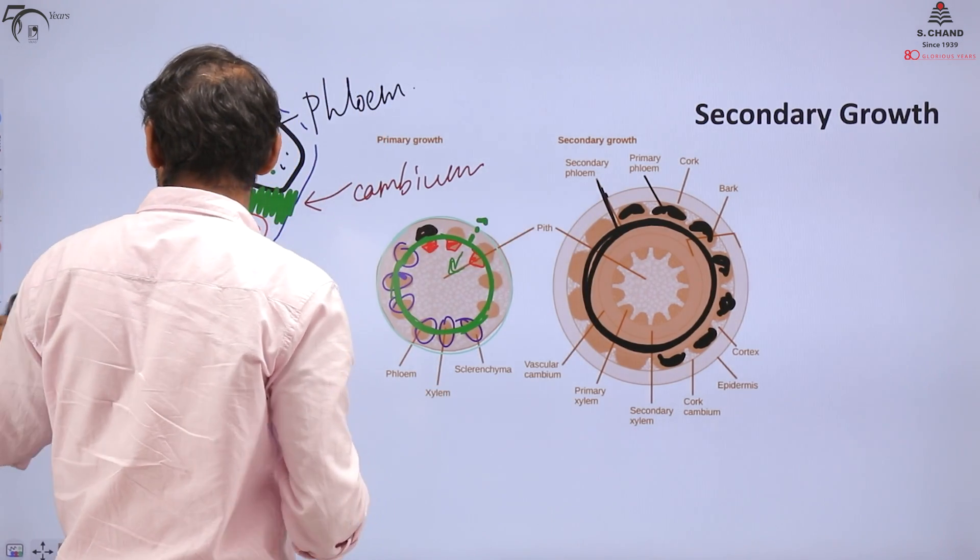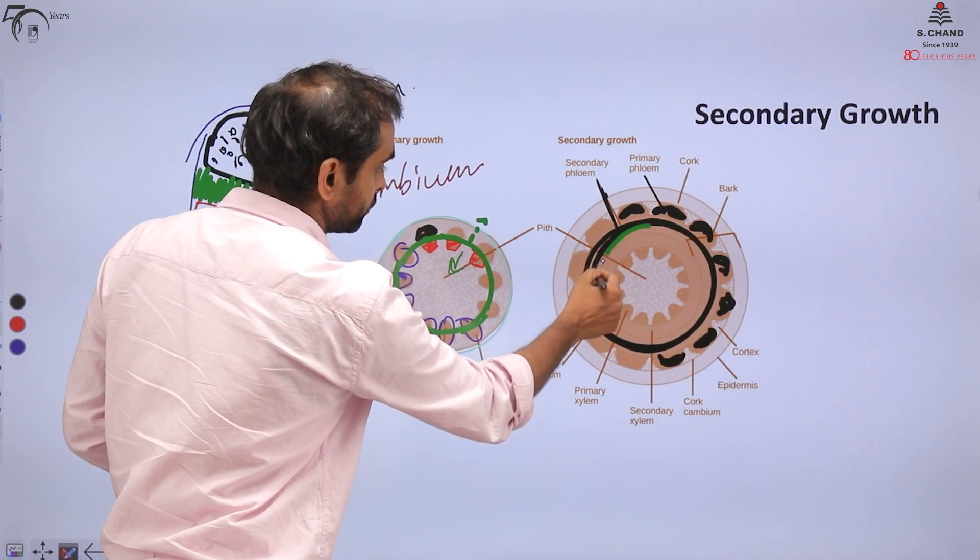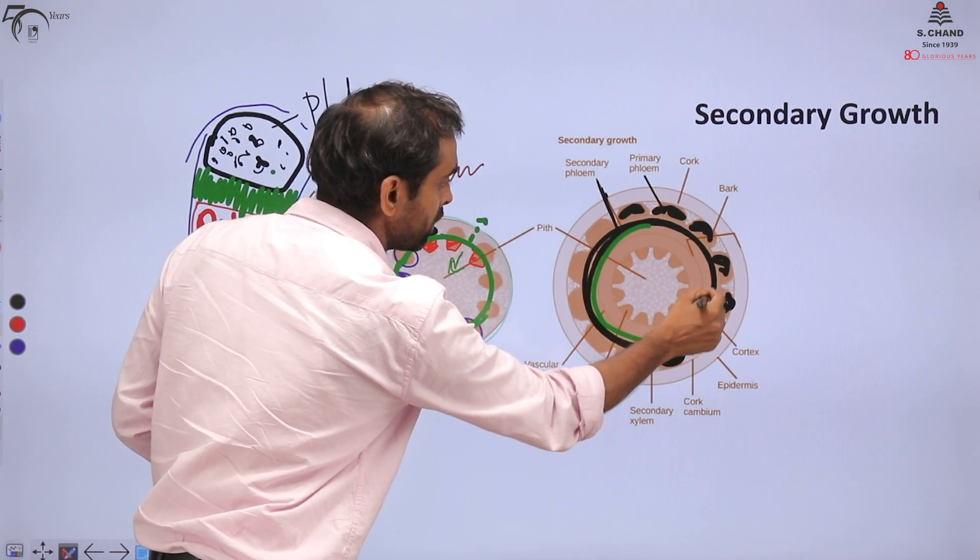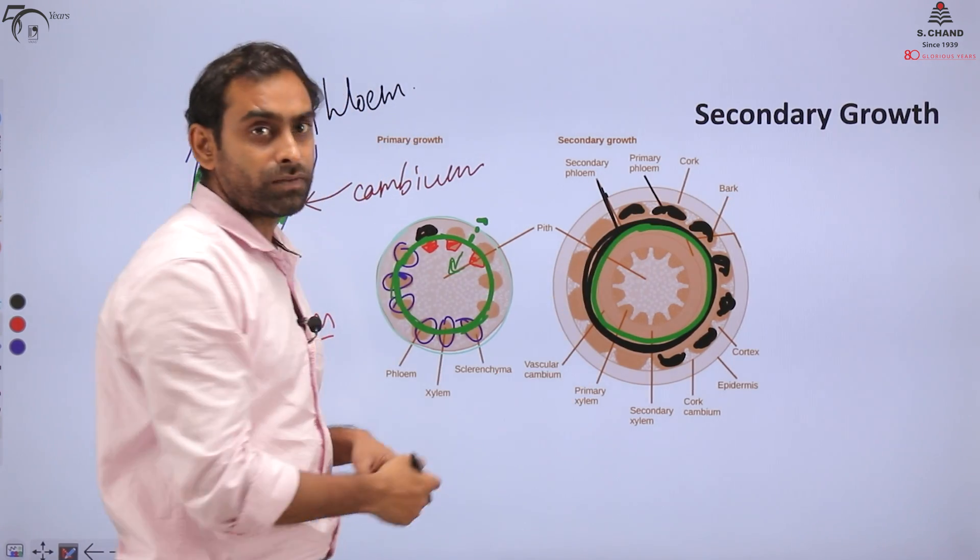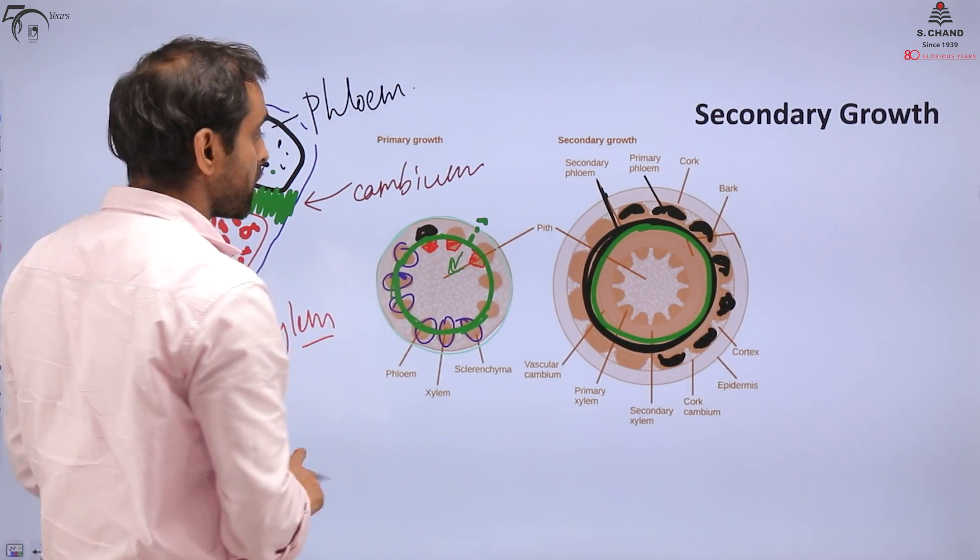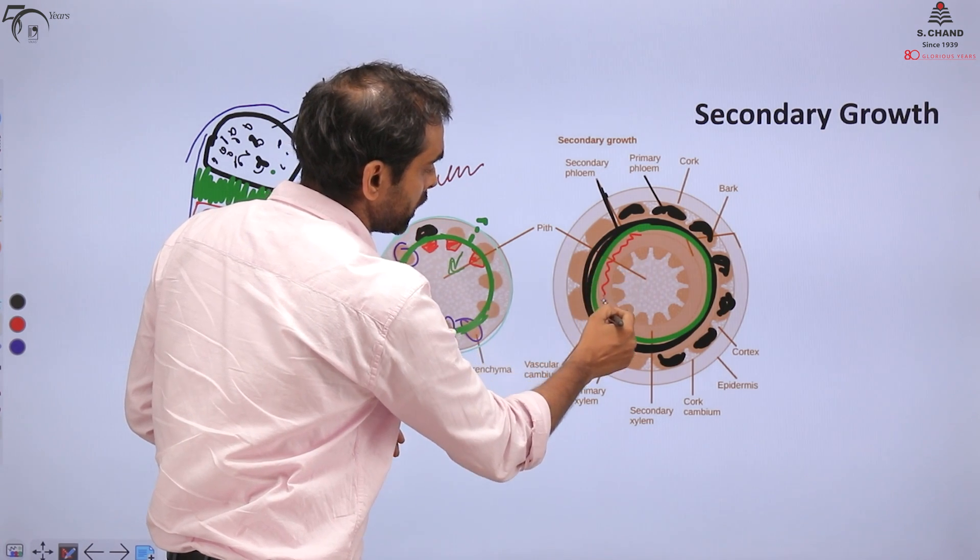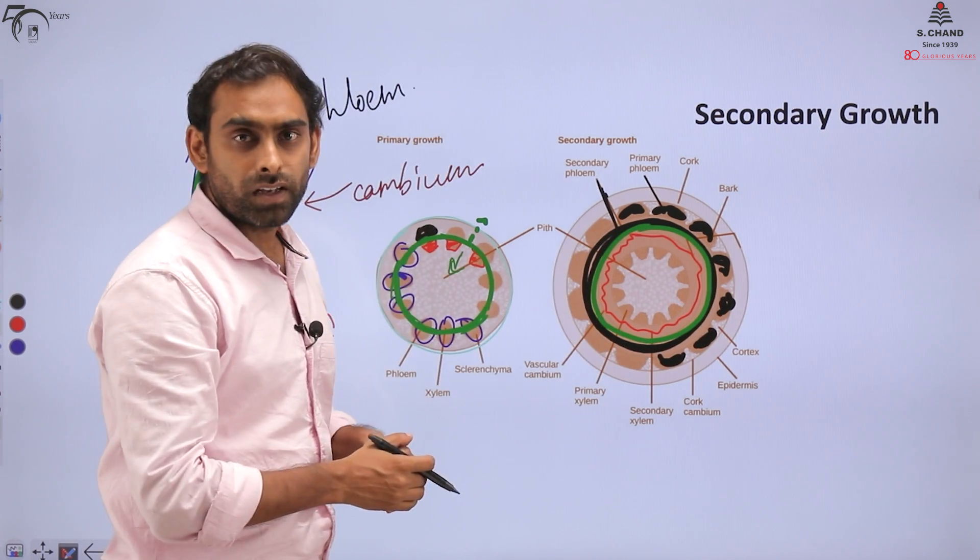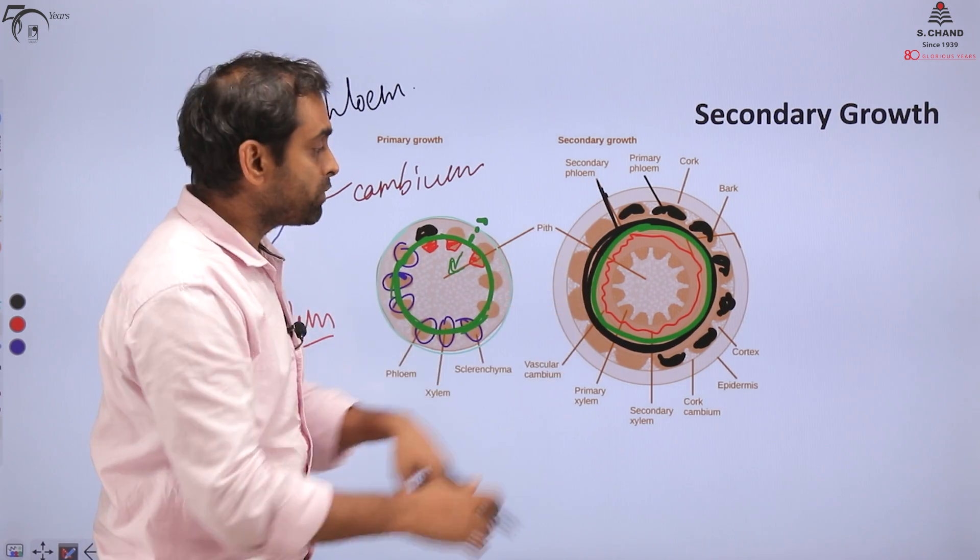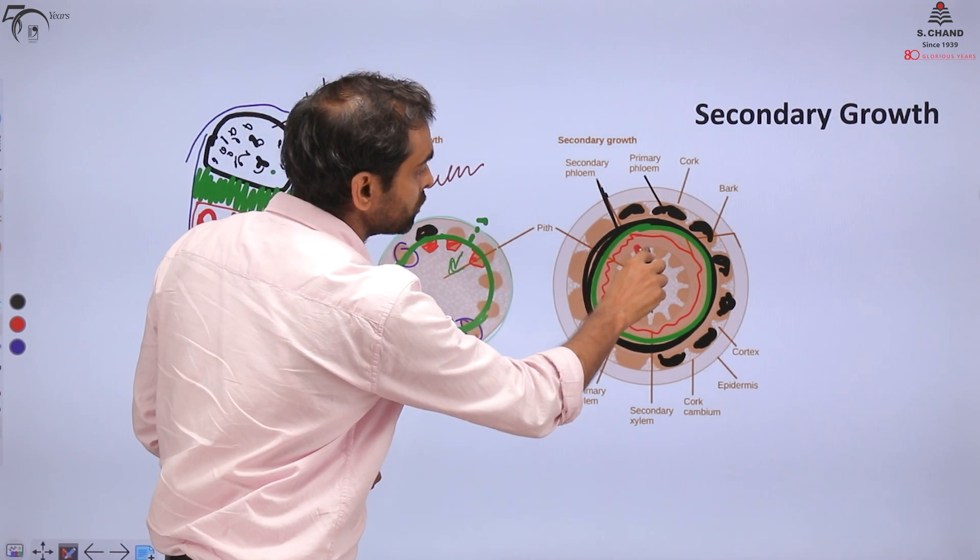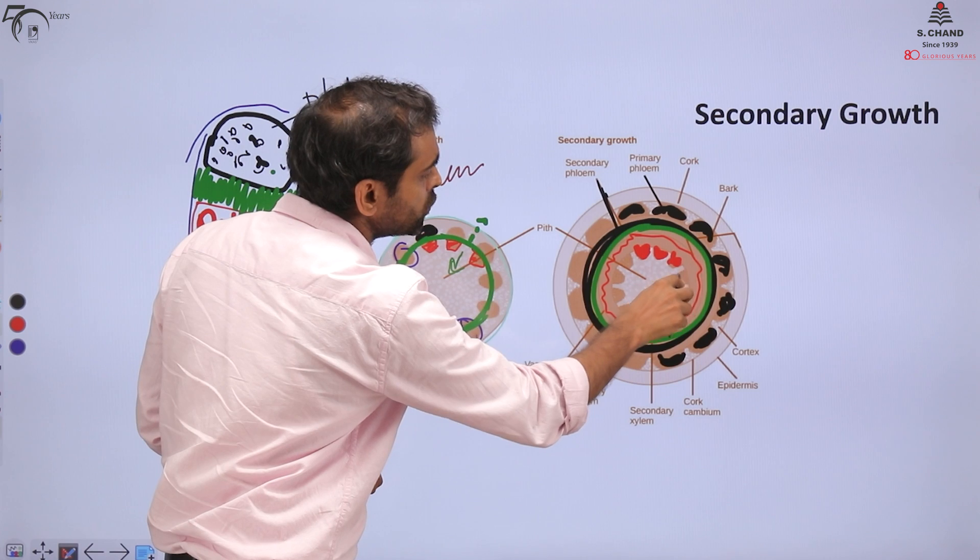The phloem that was there before became outdated, obsolete, plant uses it much less. Many cells in it died. This one is the primary phloem, but the new layer which developed from the cambium, which originated from cambium, is secondary phloem. Cambium was present here. It continuously makes new phloem towards the outside.